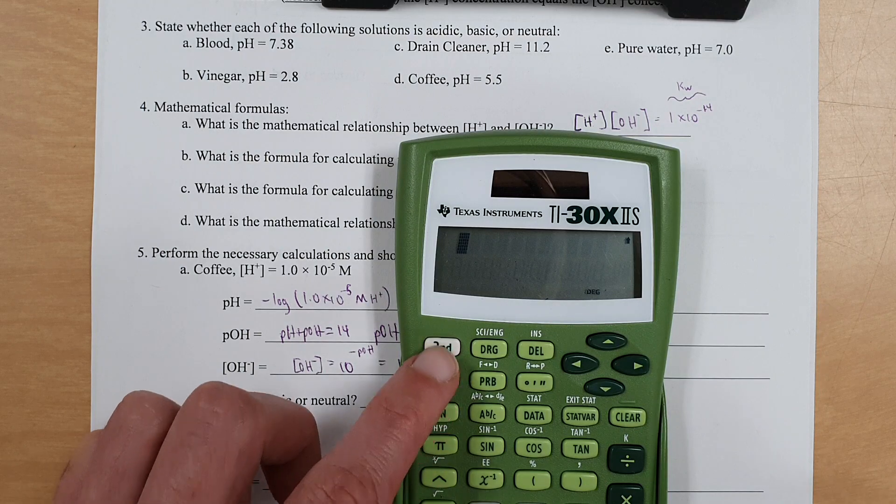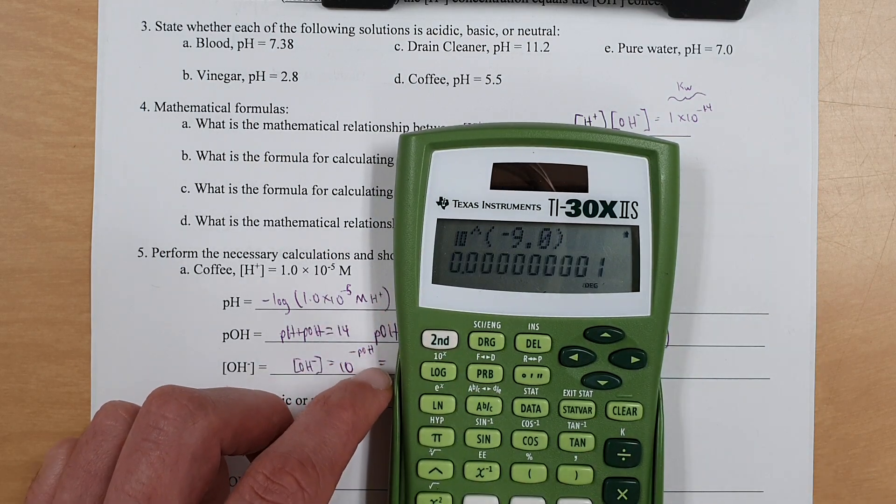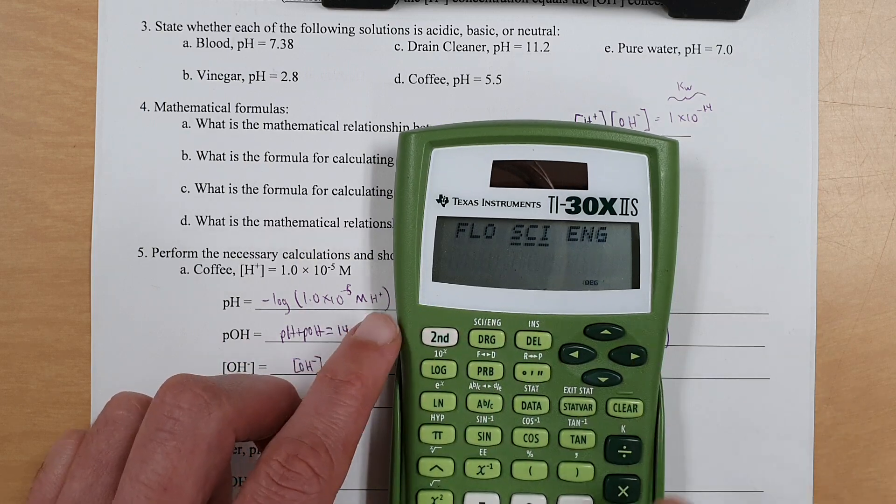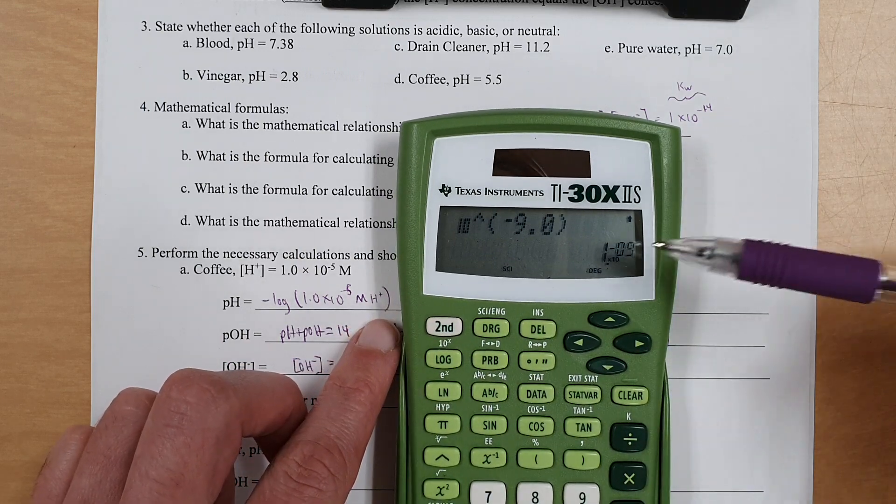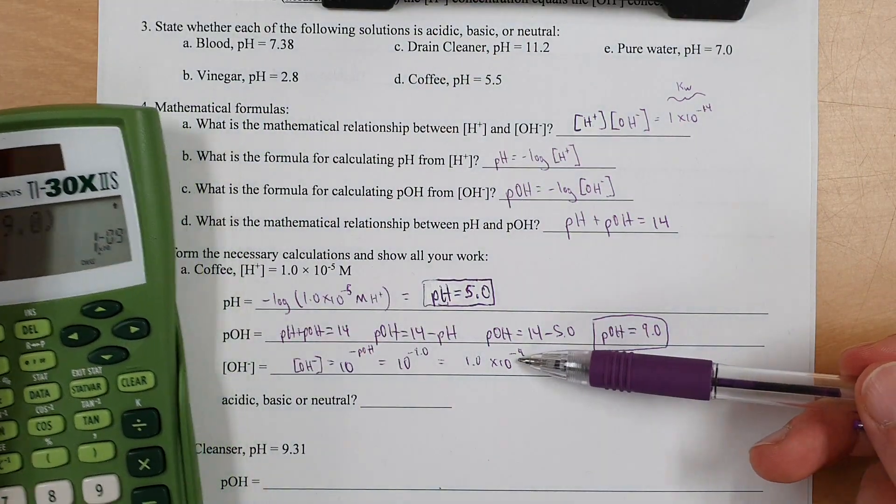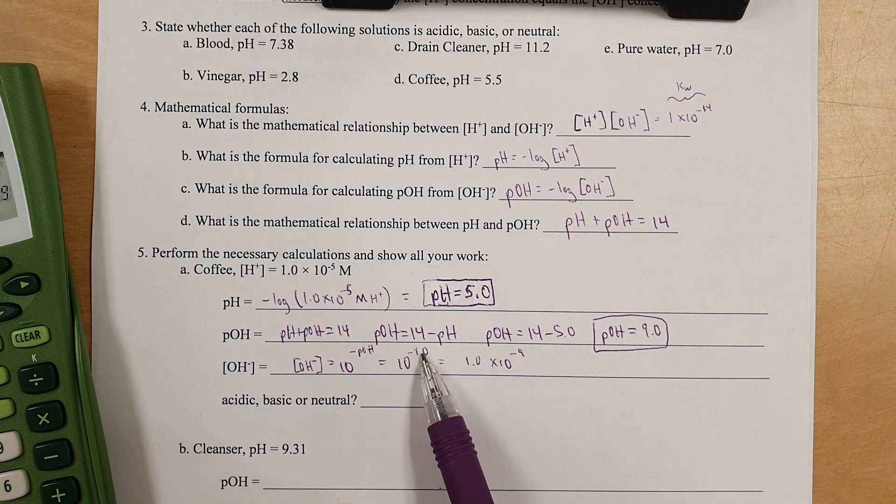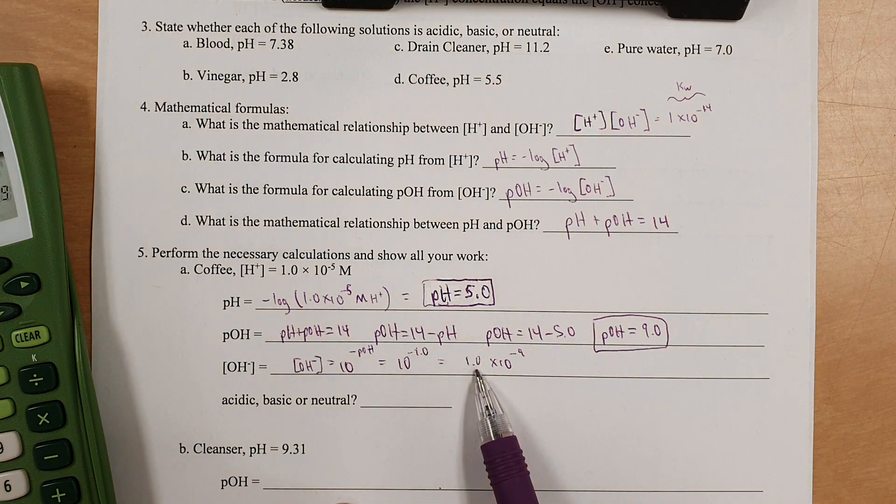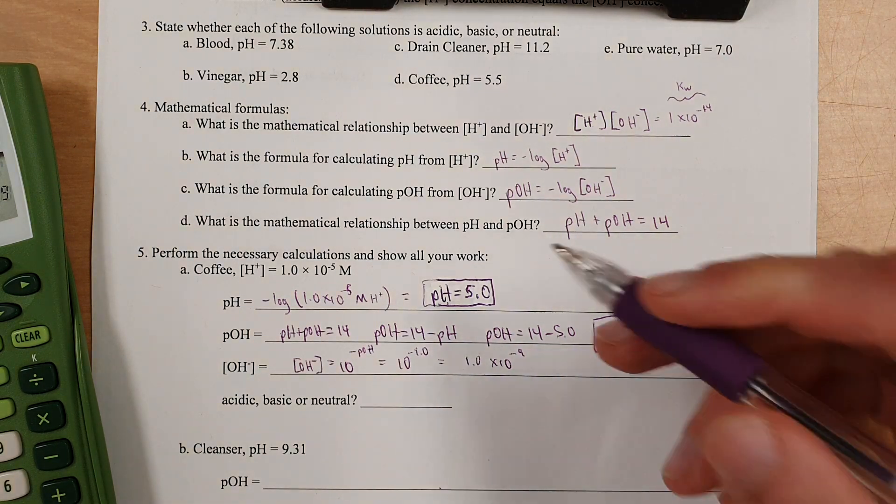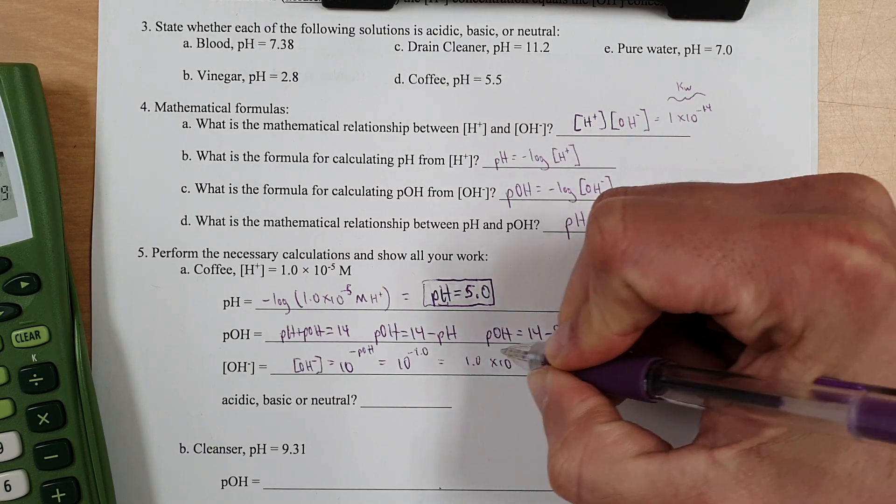Here, let me show you that. There you go. 1 times 10 to the negative ninth. Now, I changed it to 1.0 because I put in a number with two sig figs, so I got out a number with two sig figs. I'm going to add units and chemical identity.